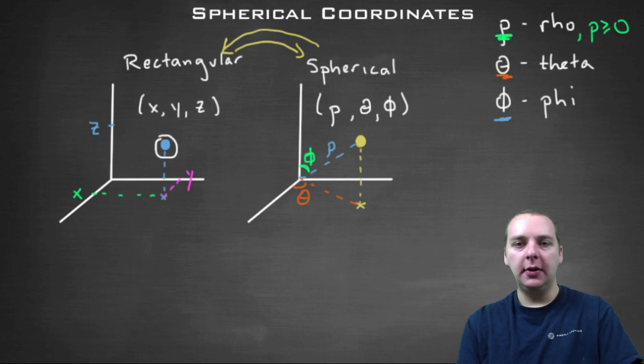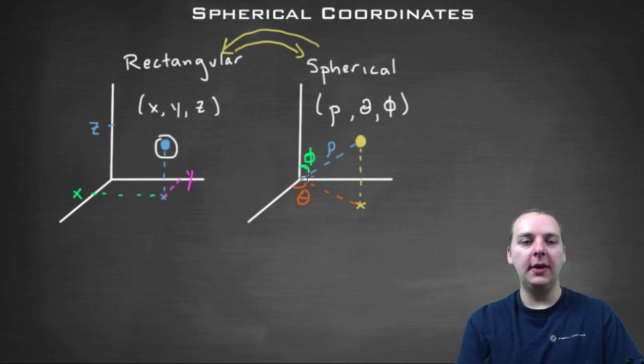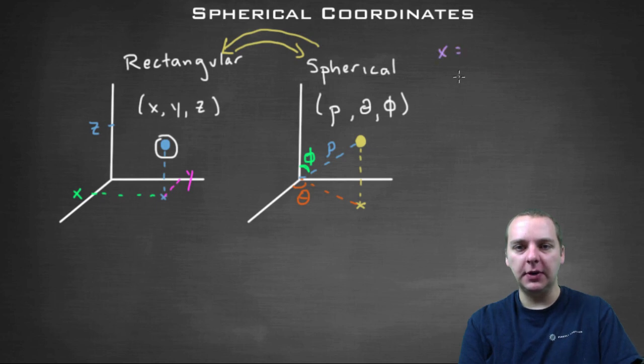Alright, so I'm going to need a good little bit of space, so let me erase this up here. And let's go for it. So let's see, how would we get, let's say the x coordinate. If we were given a rho, a theta, and a phi, how would we get x?